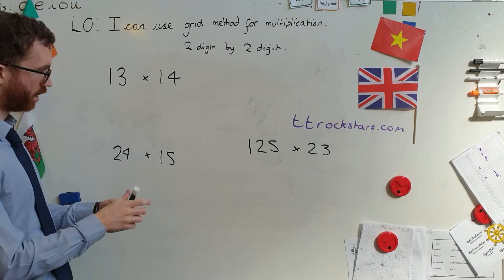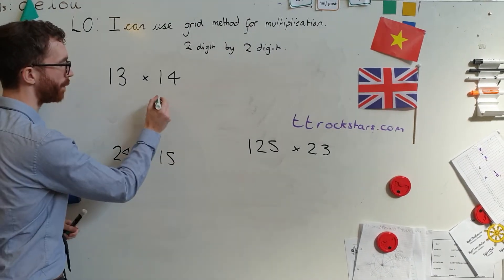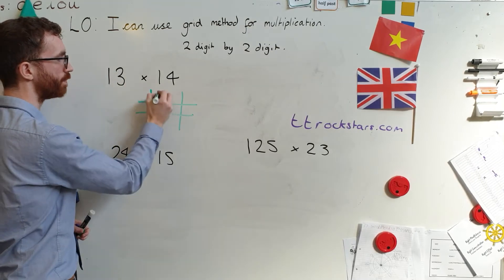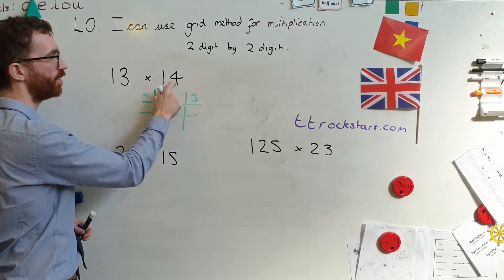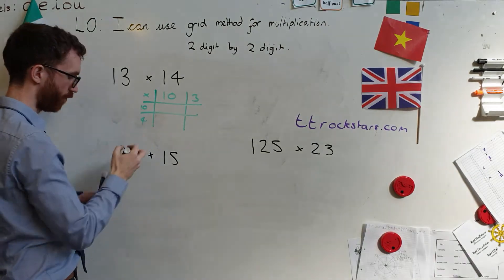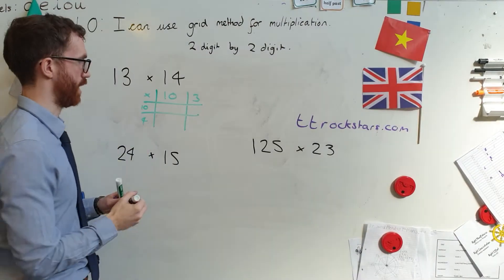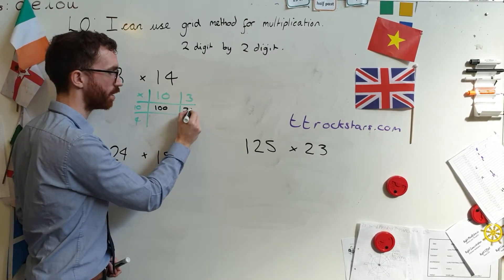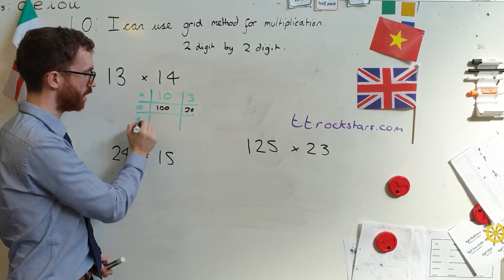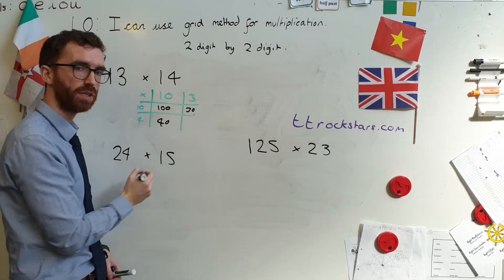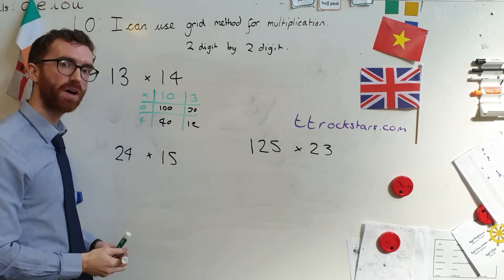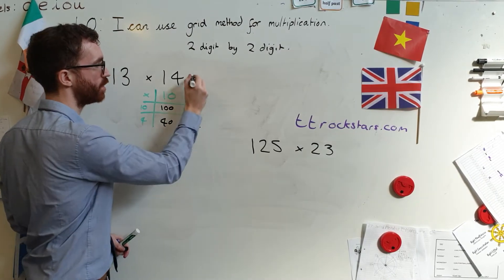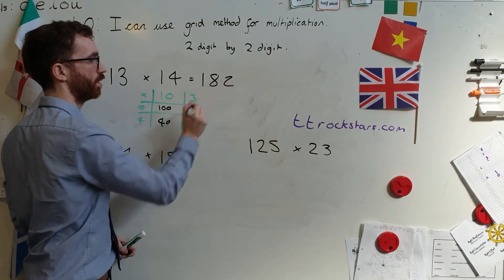Don't forget to rub anything out. We're back. Let's make my grids. So, grid for the first one. Partition. 10 and 3. Partition. 10 and 4. Multiply. 10 times 10. 100. 10 times 3. 30. 10 times 4. 40. 4 times 3. 12. Add them together. 100. 140. 170. 182. Simple.